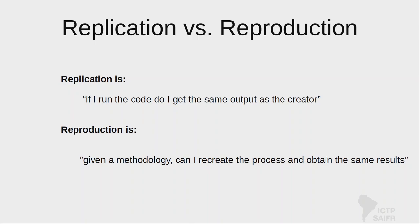As motivation, one paper looked at the Harvard Dataverse repository over 10 years. They gathered different datasets and tried to evaluate and rerun the code. Looking at R specifically, they found 75% of the files they downloaded and tried to run failed — there was an error in the initial execution. Even when they tried to correct for some of those errors, a whole bunch of that code still failed. They said many of these errors could be prevented with good coding practices.